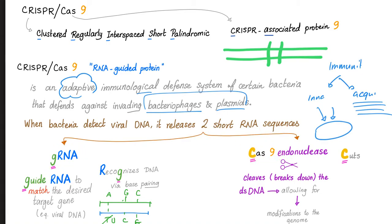The other short RNA sequence is the Cas9 endonuclease. Cas — it cuts, it cleaves. It breaks down the double-stranded DNA, allowing for modification to the genome.